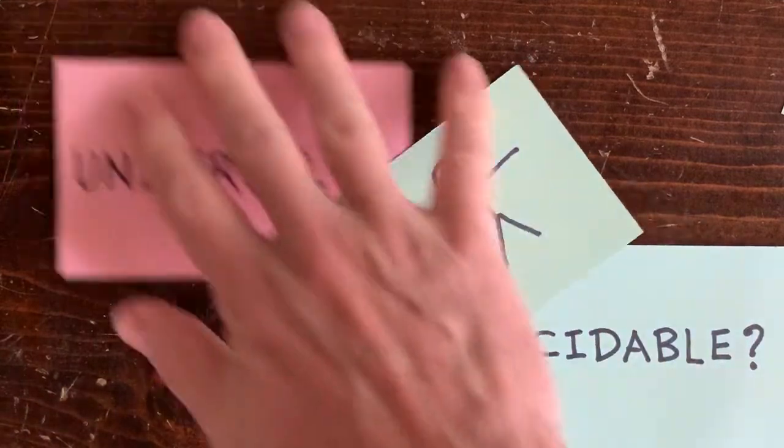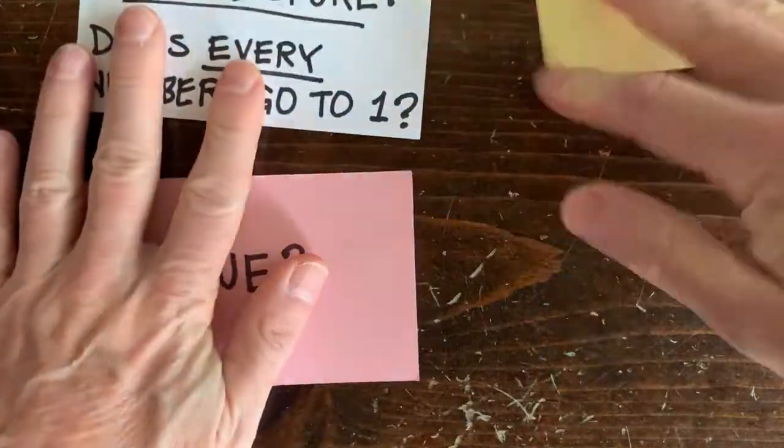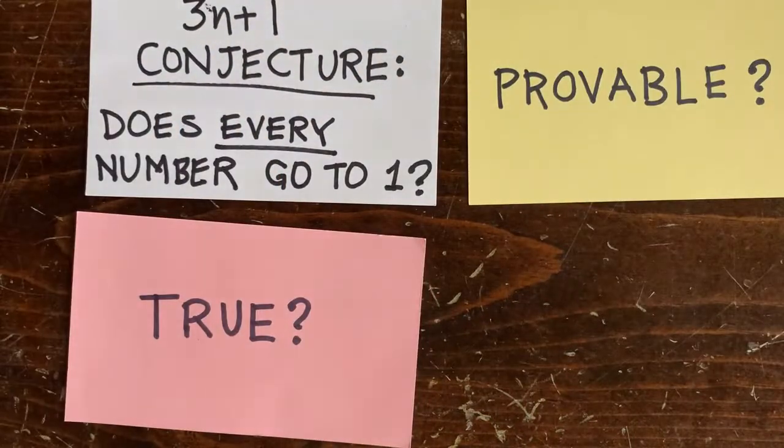Okay, now there's one more philosophical point I want to talk about. Suppose everything's good, that the 3N plus 1 conjecture is true and provable. We just have to prove it. Can we say anything about how long the proof might be?